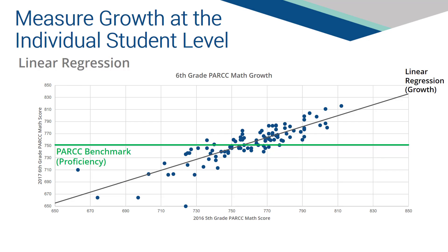Furthermore, the horizontal benchmark line reflects the nature of proficiency in that all students are expected to have the same or higher PARCC score in grade 6 — in this case 750 — regardless of their score in grade 5. Previous policies under NCLB only considered proficiency. In contrast, the gray line represents growth via linear regression. The non-horizontal slope of the linear regression reveals that the score expected of a student in grade 6 depends on their score in grade 5.